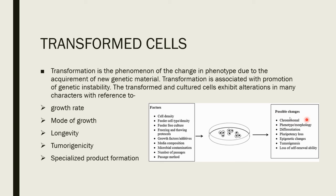Indicators of transformation include chromosomal instability, phenotypic characteristics such as morphology, whether the cells are pluripotent or not, and epigenetic changes — which are changes that occur due to environmental factors. Tumor cells can give rise to specific continuous cell lines, which can also be an indicator. Some cells also lose the capacity for self-renewal, which can be an indication of transformation.